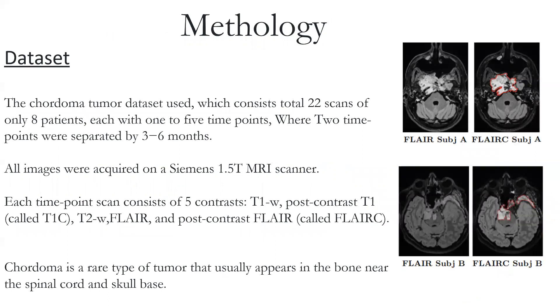For methodology, in this paper the chordoma brain tumor dataset was used. Basically, chordoma is a rare type of tumor that usually appears in bone near the spinal cord and skull base, which consists of 22 scans of only 8 patients. From one patient, one to five scans were taken, where two scans were separated by three to six months.